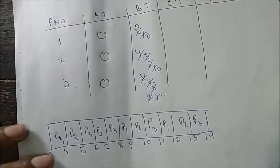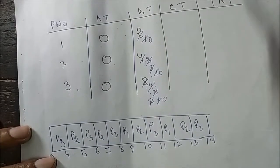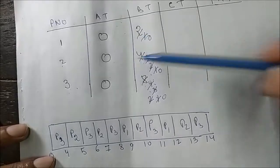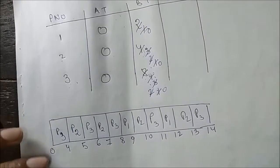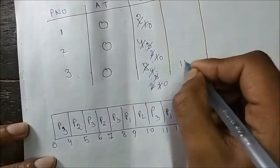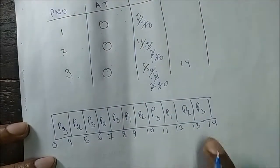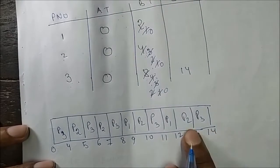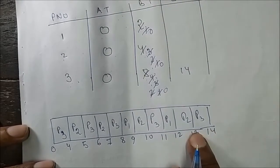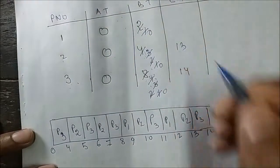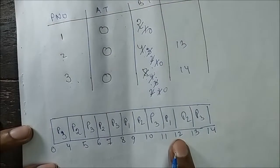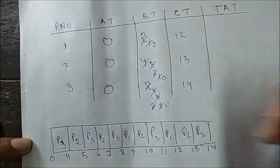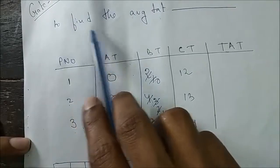Now we write the completion times. The completion time of P3 is 14 units, the completion time of P2 is 13 units, and the completion time of P1 is 12 units.